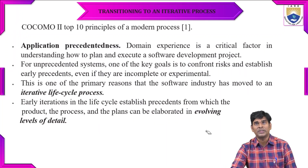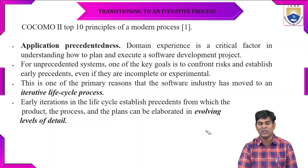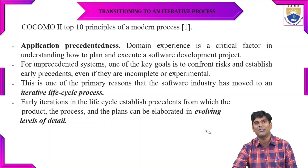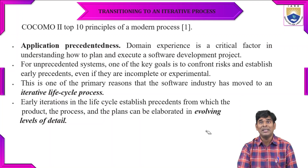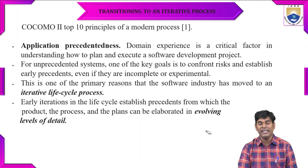In the iterative process, we have the COCOMO 2 top 10 principles in a modern process. The first one is application precedence. Mainly they need to check what is the ultimate goal and where they are going to implement this software development project. That domain has to be verified. The critical factor is how much they are going to understand and what is the plan and execution of a software development project. They should not leave systems unpredicted. They need to predict which applications they are going to implement in the software development process. Unpredicted systems can have more risk, so they need to identify and minimize the faults in the applications.